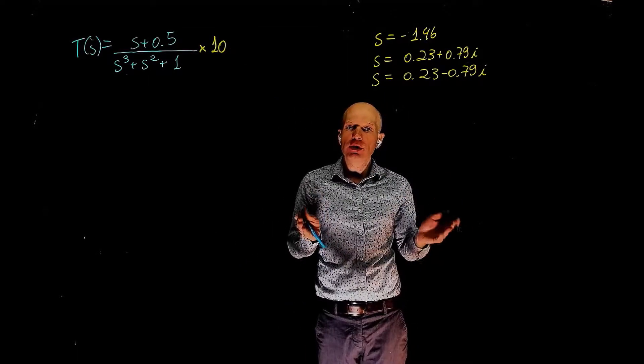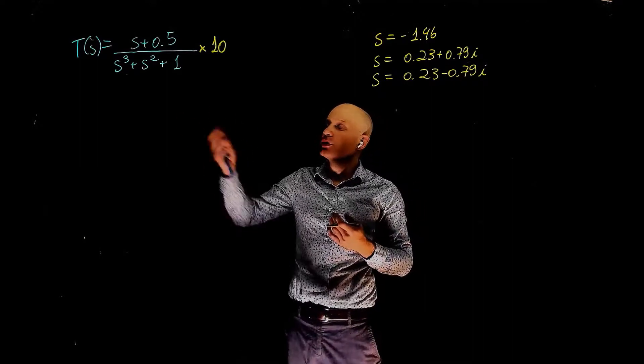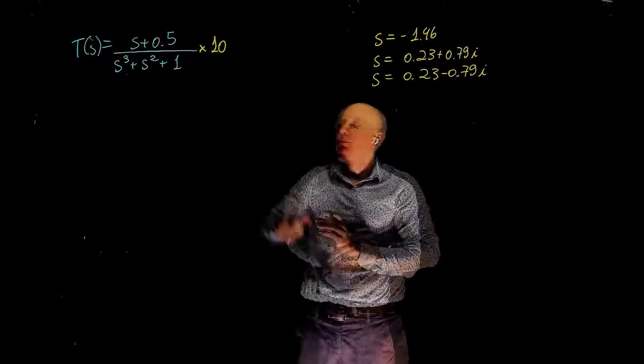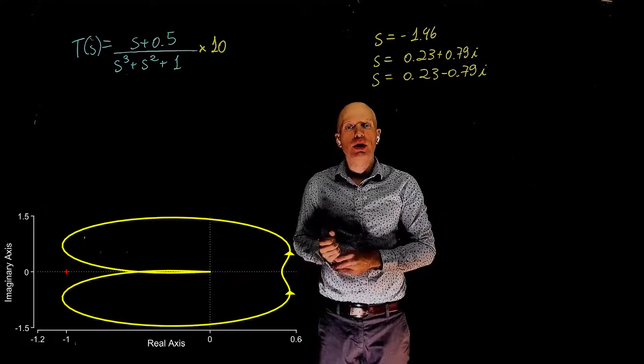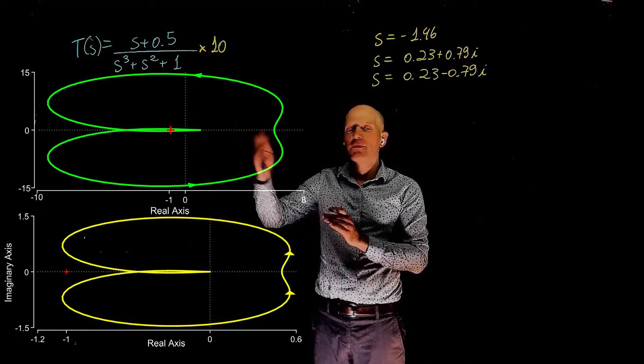Would a negative unit feedback system be closed loop stable if the loop function is T of S? Here we have the original Nyquist plot, and here we have the new Nyquist plot when you multiply the same function by 10.